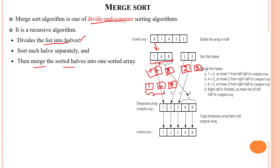Then we will compare these two elements. If 1 is less than or equal to 4 — it is true — then 1 will be arranged in the same position. Then we will compare 4 and 8. So 4 is less than 8, so no problem at all. It will be sorted like 1, 4, 8.